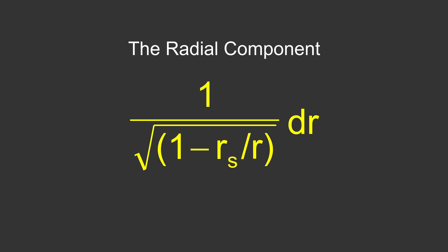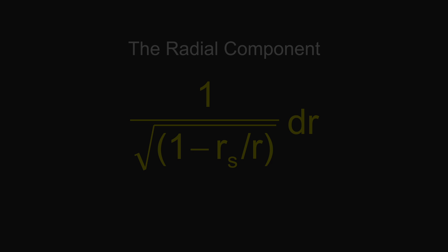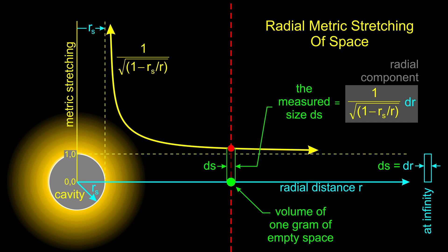The r in the equation is the distance in any direction from the center of the object, and the dr represents a small segment of that distance. The r sub s is the Schwarzschild radius, also known as the event horizon of a black hole. The radial component describes how the geometry of space changes with the distance from the center of the object, a phenomenon known as metric expansion, or metric stretching, of space.